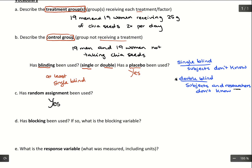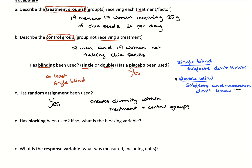Random assignment is very important. It creates diversity within each of the groups — the treatment and control groups. If we didn't use random assignment, if we let subjects choose or separated them based on some factor, we'd be letting lurking variables come in. But with random assignment without any bias, it creates diverse groups with different factors and characteristics, which is what we want when comparing treatment and control groups.